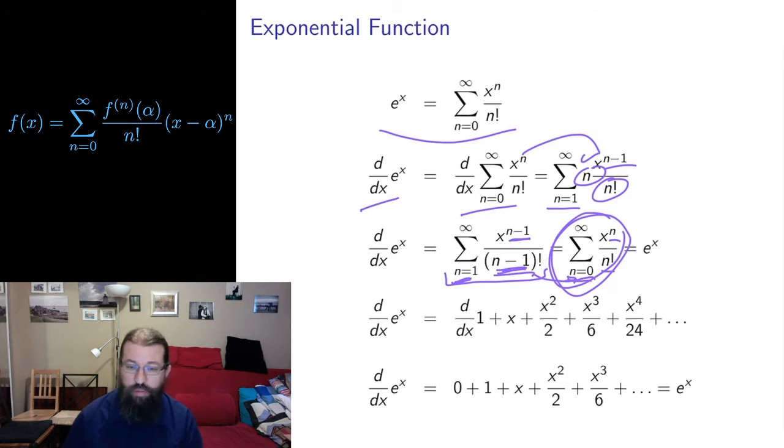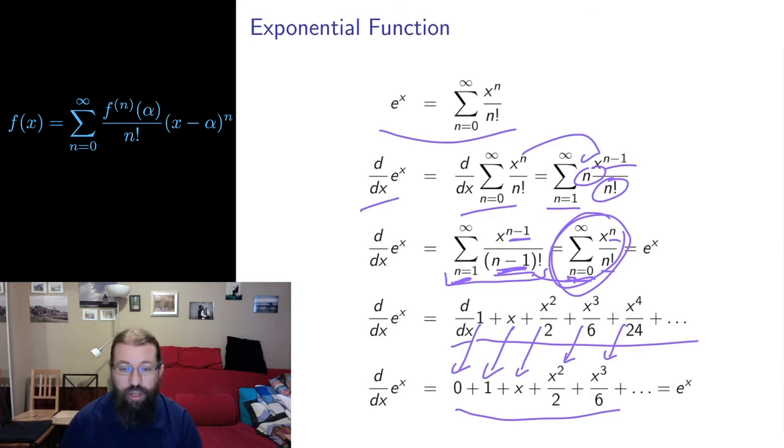You can see this a bit more explicitly if I write out the first few terms. So here are the first few terms. If I differentiate them, I differentiate them term by term. Derivative 1 as a constant is 0. Derivative x is 1. Derivative x squared over 2, the 2 comes down, cancels off, I just get x. Derivative x cubed over 6, the 3 comes down, cancels off the 6, I get a 2 in the denominator, and what's left is x squared over 2. The 4 comes down, cancels 4 over 24, same as 1 over 6, I get x cubed over 6, and I in that way build up again exactly the same series as I had before. So the derivative of e to the x is in fact e to the x.